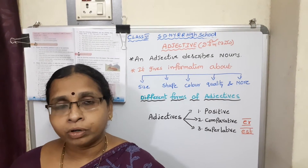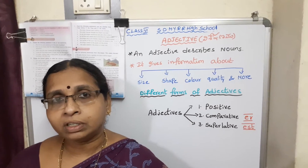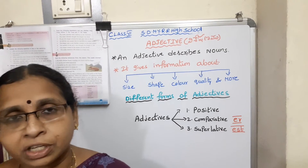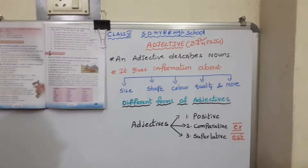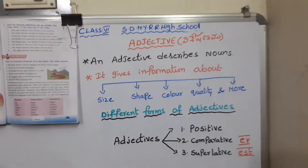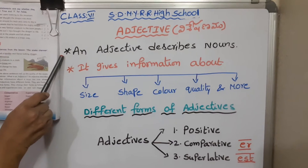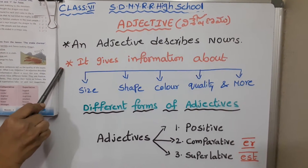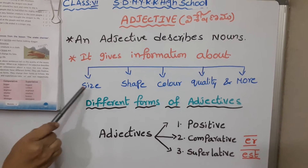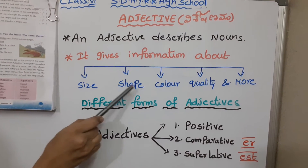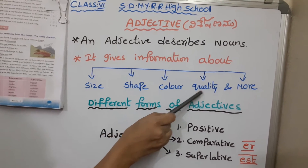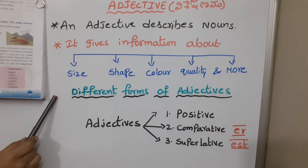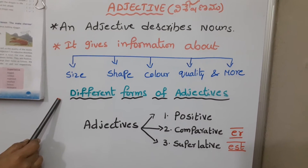Hi children, good morning. Today we will discuss about adjectives. In Telugu, they are called Iseshanamu. An adjective describes about nouns. It gives information about size, shape, color, quality and more. In adjectives, different forms are there.